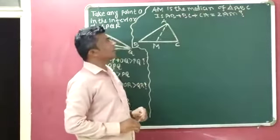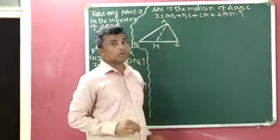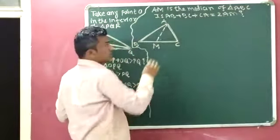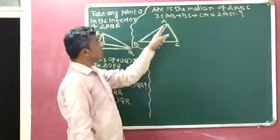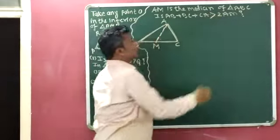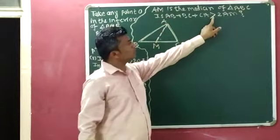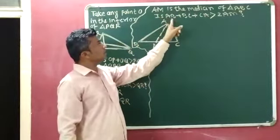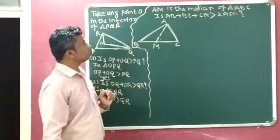AM is the median of triangle ABC. We need to check: is AB plus BC plus CA greater than 2AM? Triangle ABC is given to us and AM is the median, with point M available. We have to check if AB plus BC plus CA is greater than 2AM.